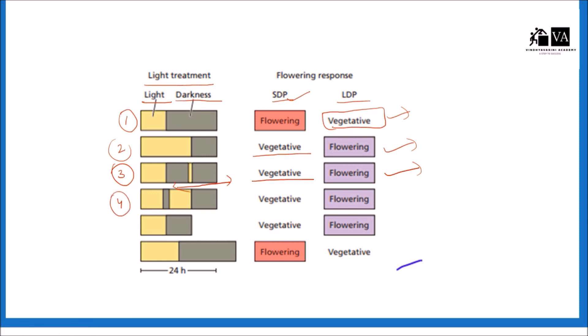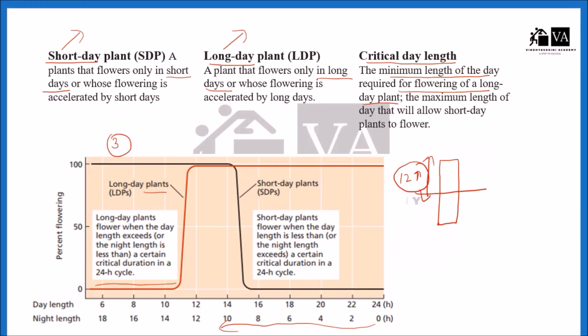In the fourth case, there is sunlight, then darkness, then sunlight, then darkness — again no long uninterrupted period of darkness for the short day plant, so short day plant will remain vegetative and long day plant will flower. In the fifth case, there is an equal amount of sunlight and darkness, so short day plant again remains vegetative and long day plant will flower. In the sixth case, there is a long period of darkness beyond the critical duration, so the short day plant will flower and the long day plant will remain vegetative.